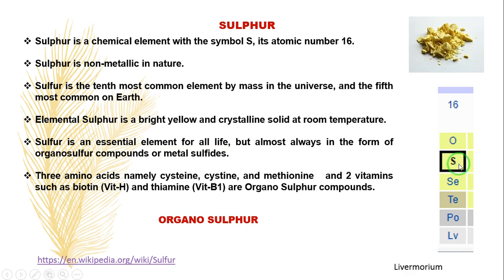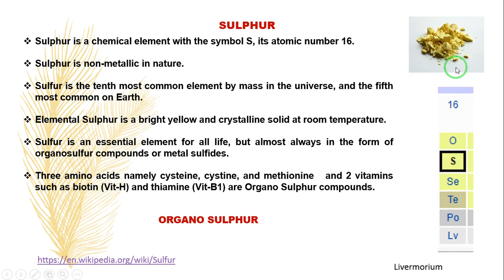Sulfur is a chemical element with the symbol S and its atomic number is 16. It is non-metallic in nature. It is the 10th most common element by mass in the universe and the 5th most common on earth. Elemental sulfur is a bright yellow crystalline solid at room temperature. This is an essential element for all life. Generally, sulfur is always present in the form of organosulphur compounds or metal sulfides.